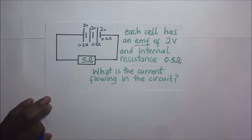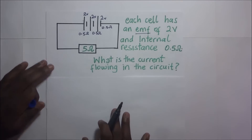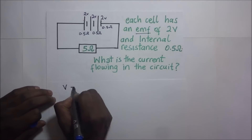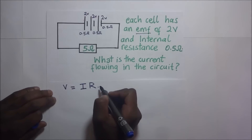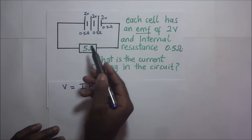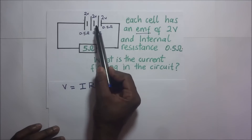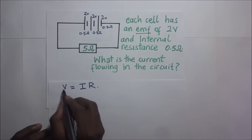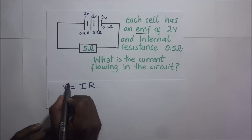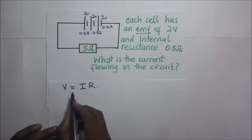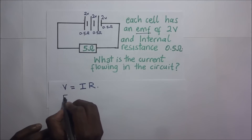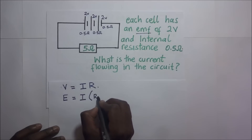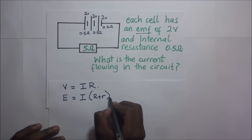What is the current flowing in the circuit? We know that V is going to be equal to current I times R. But we know that these cells have an EMF and also what we call internal resistance. So the potential difference in the whole circuit — the EMF — is going to be equal to current I times R plus the internal resistance r.